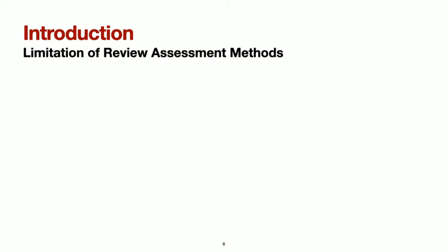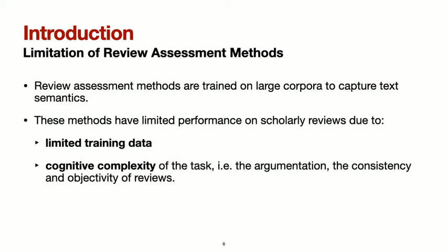Methods for review assessment have been developed mainly in the e-commerce sphere, where they are trained on massive corpora to capture text semantics, which is useful for review classification. These methods have limited performance on scholarly reviews for two main reasons. First, submission and review information of most conferences are not openly accessible due to privacy and confidentiality concerns, which limits the size of training data. Second, the task of conformity assessment is complex as it requires evaluating the argumentation, consistency, and objectivity of reviews, which are hard to evaluate using a fully automatic method.